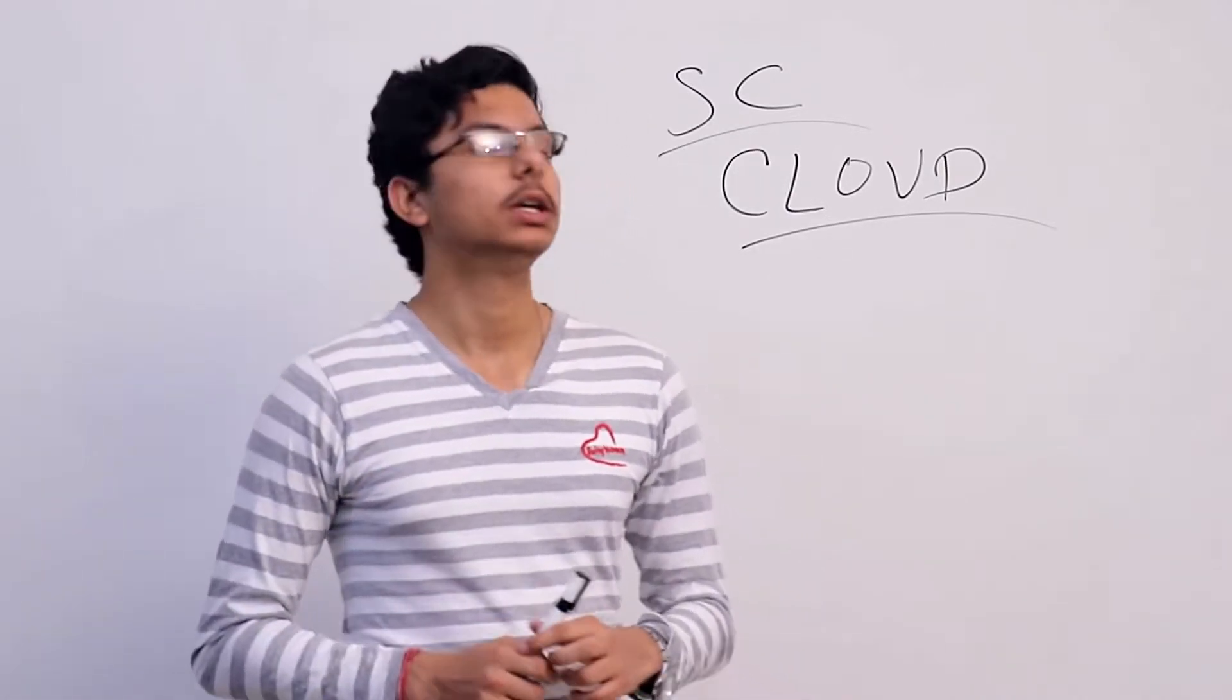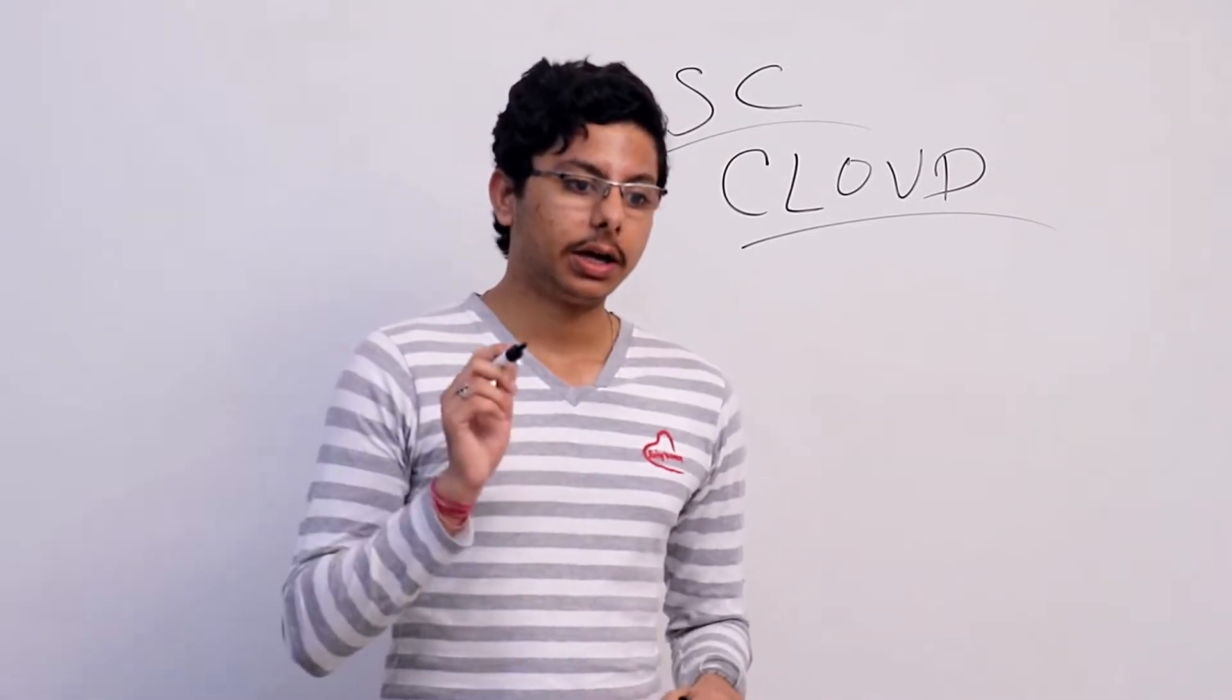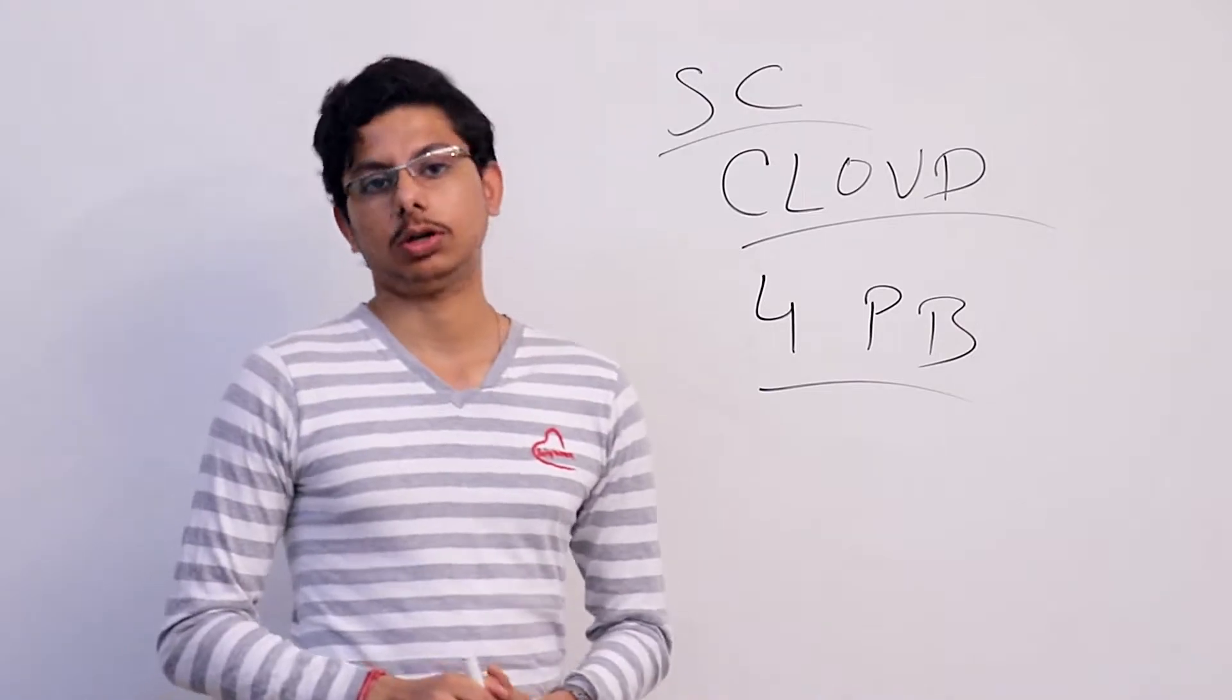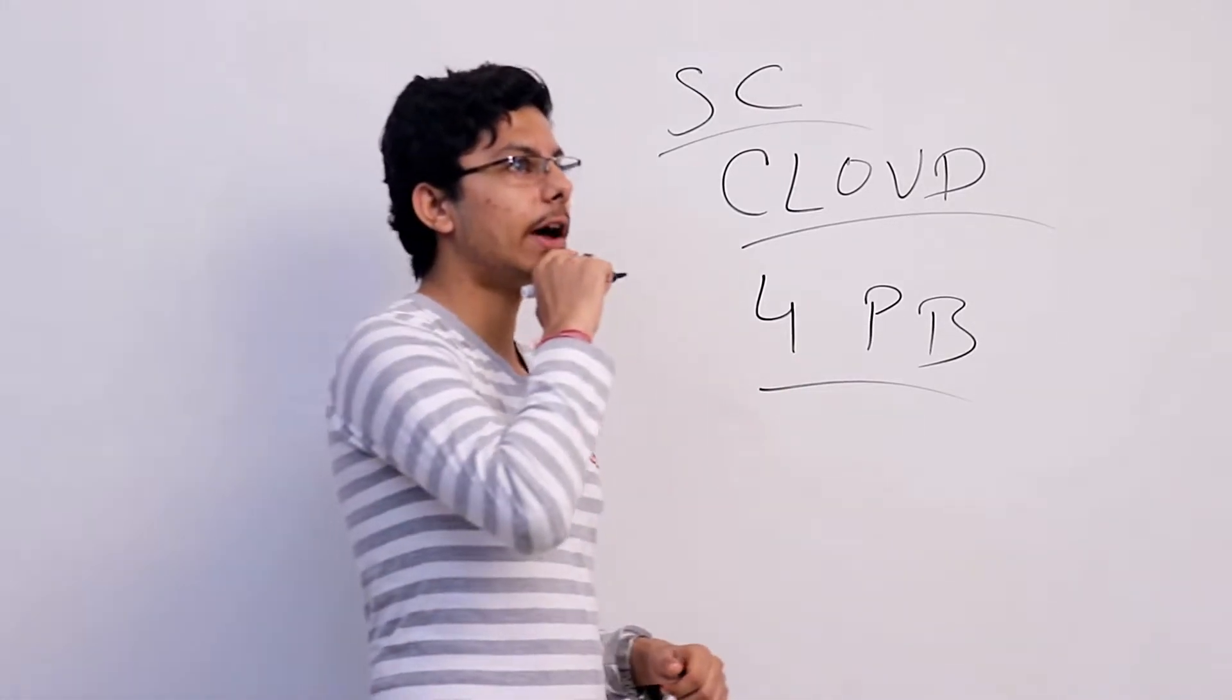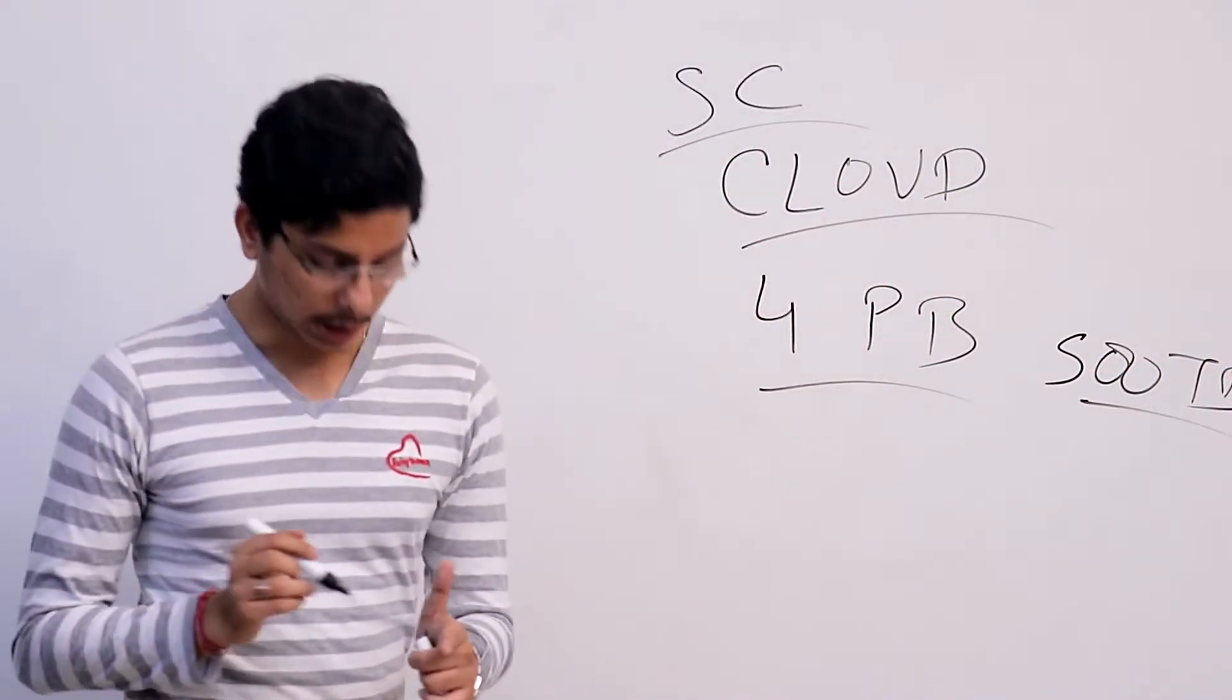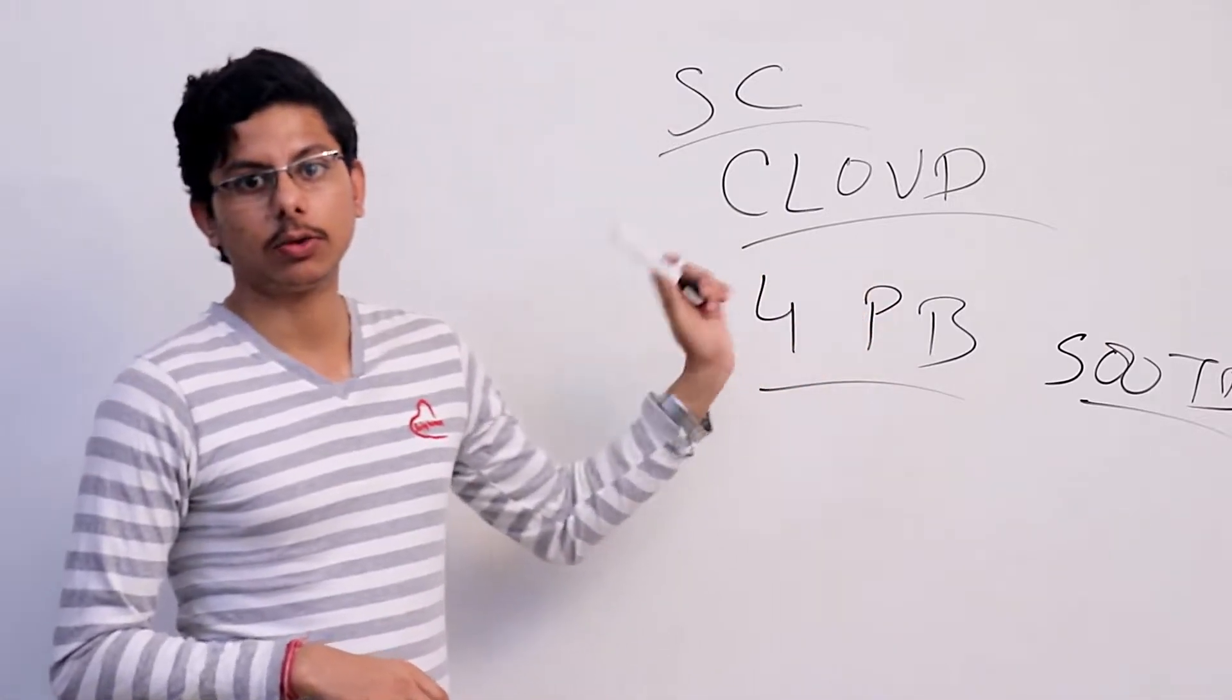What makes it great is that it has 4 petabytes of storage. That's a lot—4 petabytes. Currently there are around 500 terabytes of data which have been stored on Sia Coin till now.